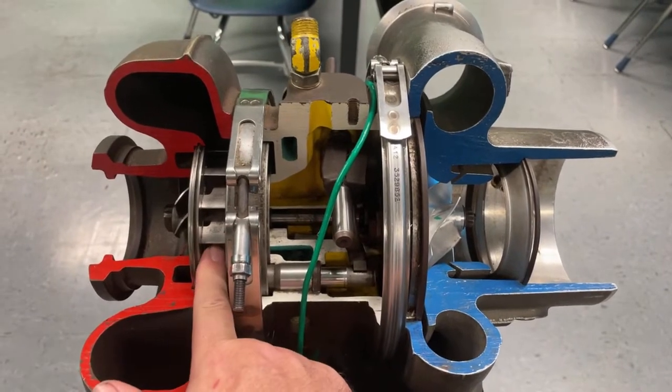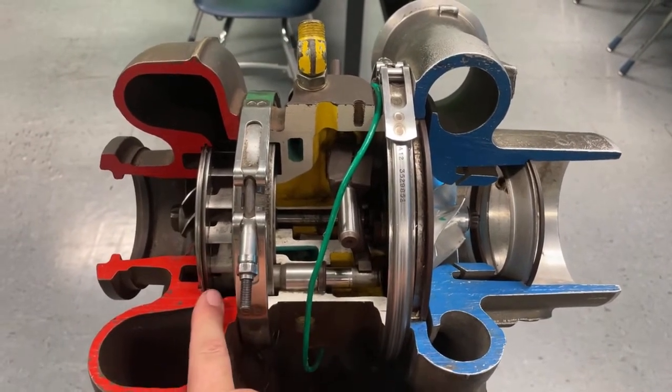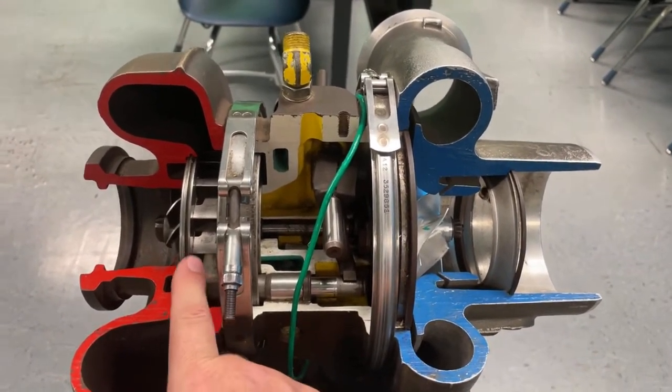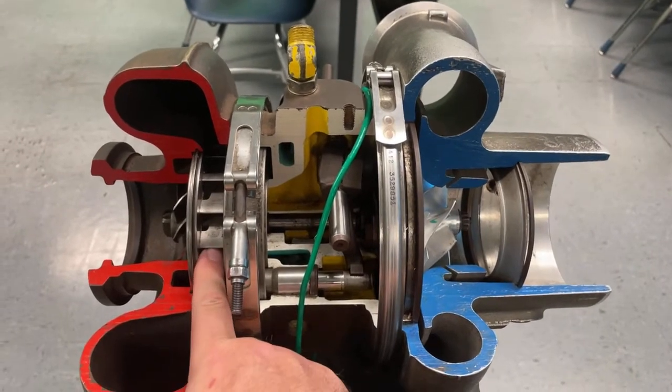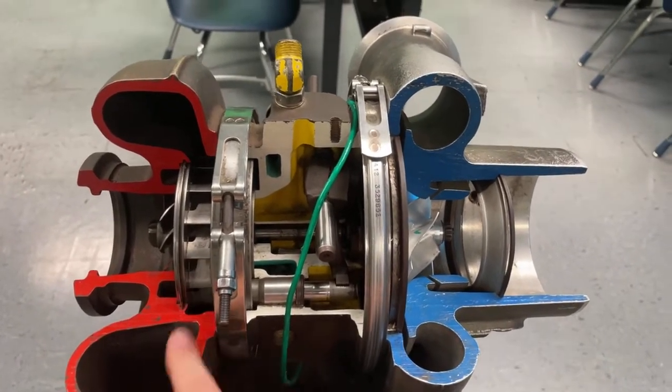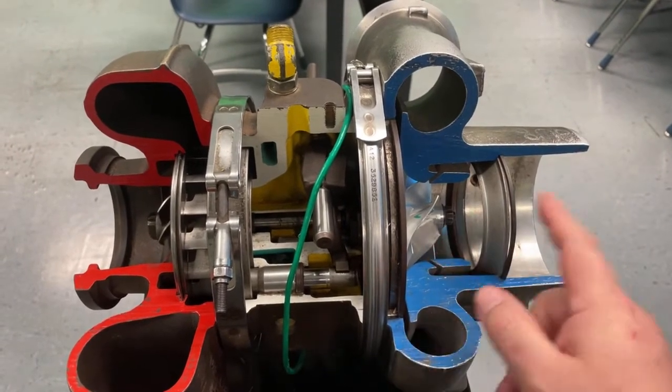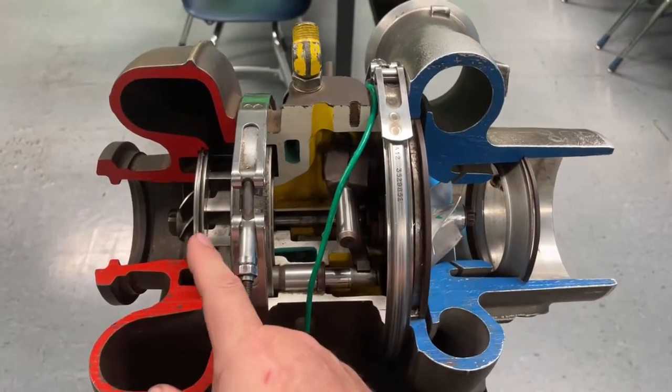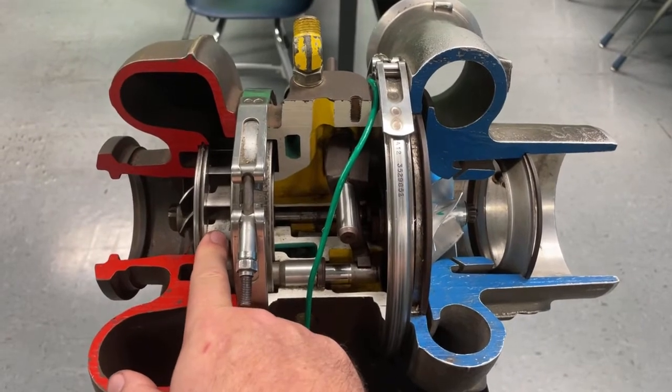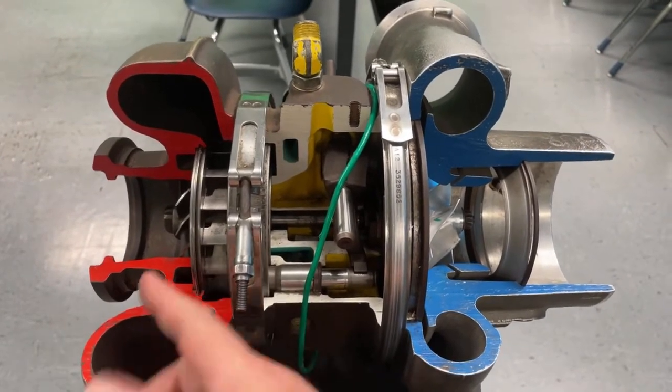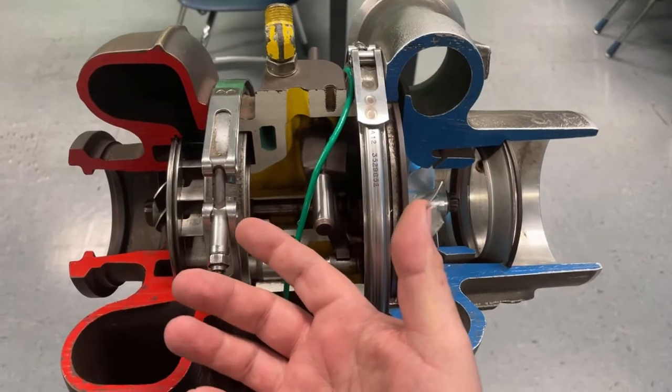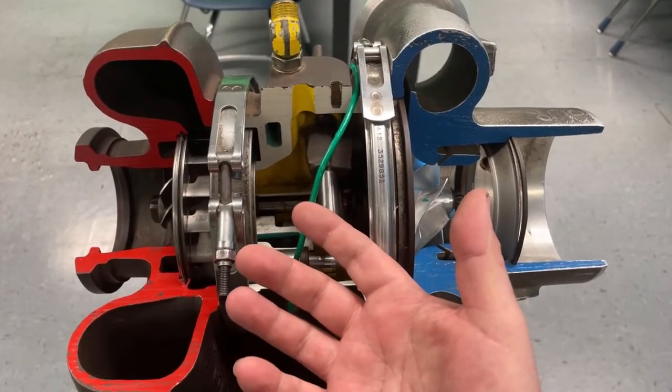And then the other thing it can do is anytime you create a restriction, restrictions tend to create pressure and heat. And so when you're doing a regen, this is going to supply more boost, which is going to make the engine run hotter, which is going to create a restriction here, which is going to make the exhaust even hotter. And that helps to regen the diesel particulate filter, helps to burn the soot down to ash.